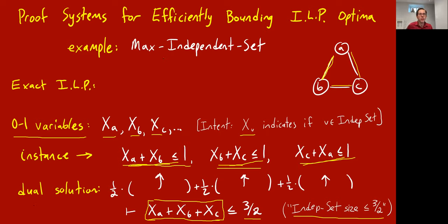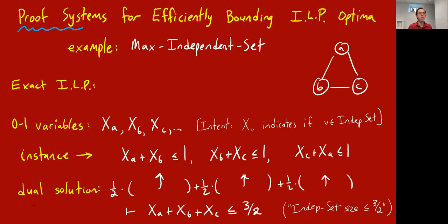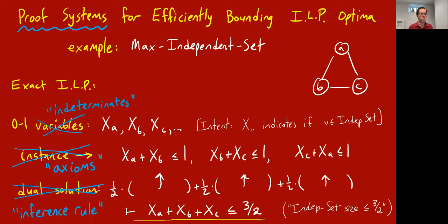Okay, so this is sort of the linear programming and dual linear programming way of formalizing it, but now I want to just change our language a little bit and talk about this more like a proof system. So I'm not going to change things per se, I'm just going to rename them. So just for clarity, I'm just going to start calling the variables indeterminates instead of variables, more or less the same thing. And I'm going to call these sort of given constraint inequalities, I'm going to start calling them axioms because they're like facts that are given to us, like xa plus xb should be at most one. And in this dual solution where I've sort of combined these axioms to derive like a conclusion, I'm going to call this an inference rule or a derivation rule.